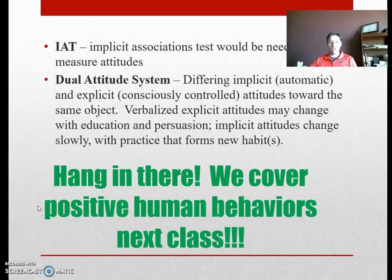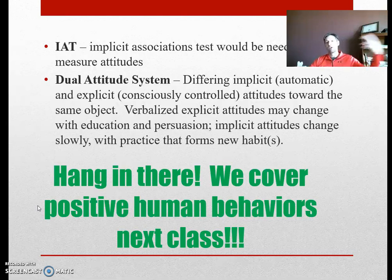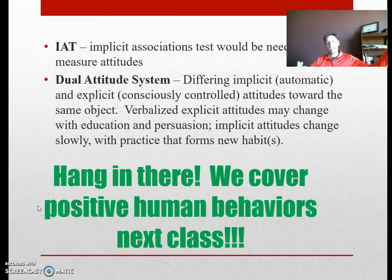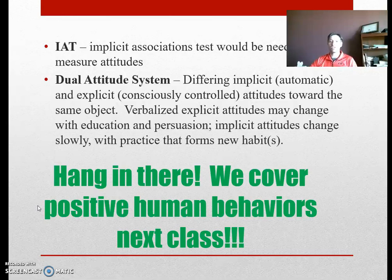A couple of items here on this slide. Implicit associations tests measure deep-down prejudices. A lot of people have a dual attitude system — you may profess 'I'm not racist, I'm not prejudiced,' and then underneath, the person kind of is. And the way you can detect that is an implicit associations test.